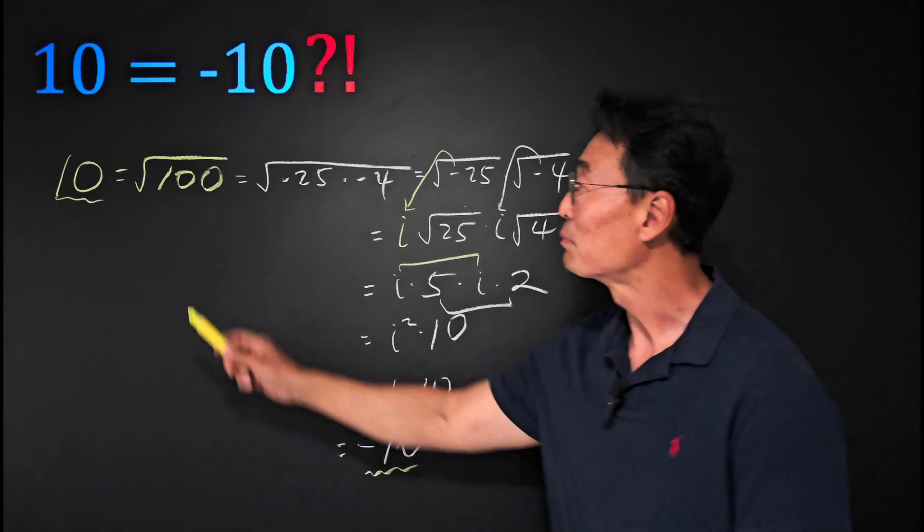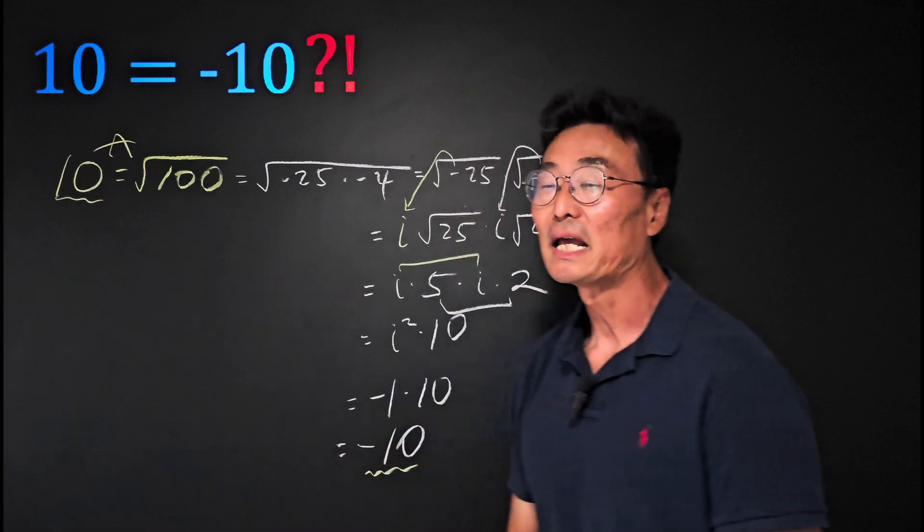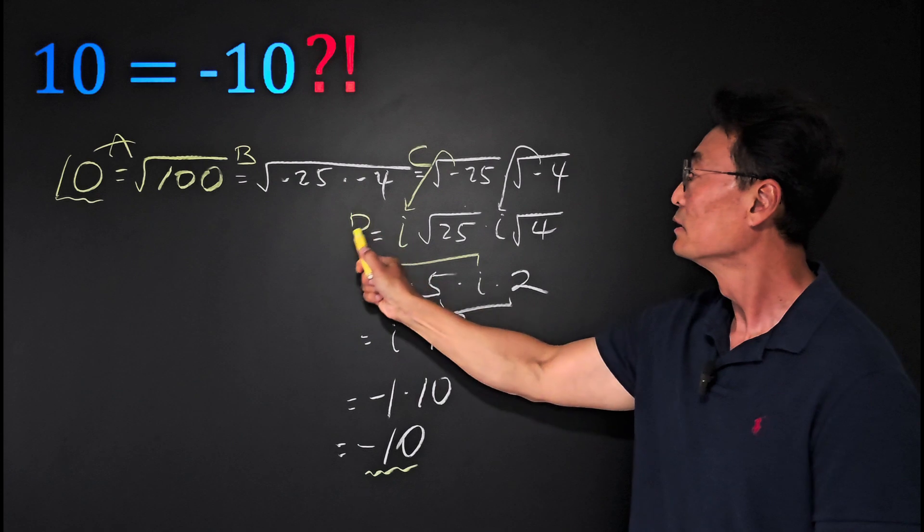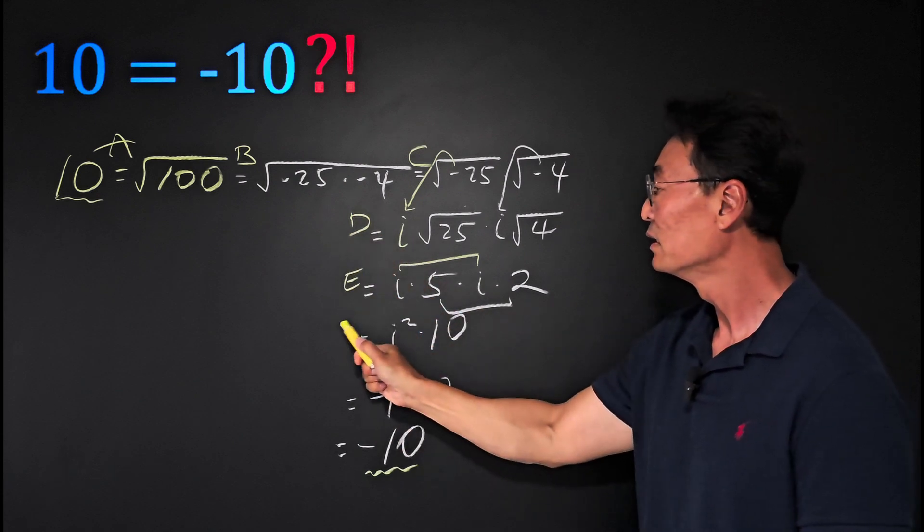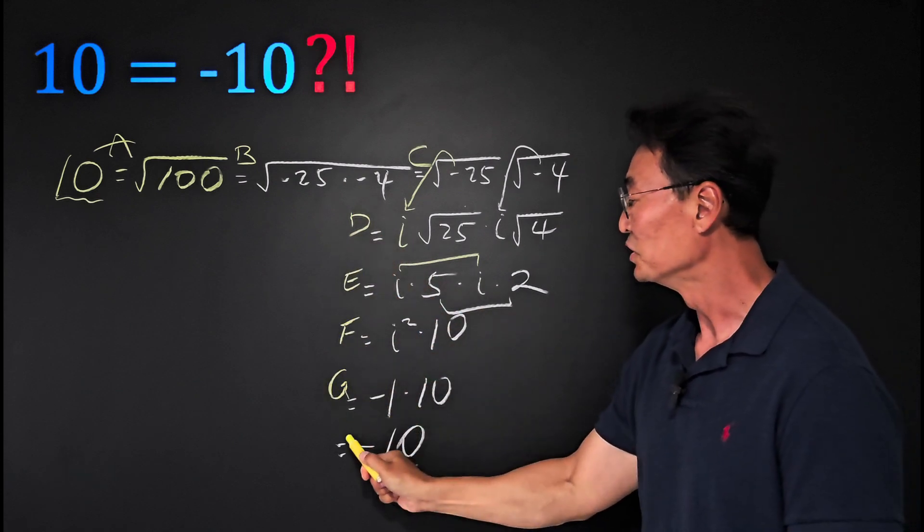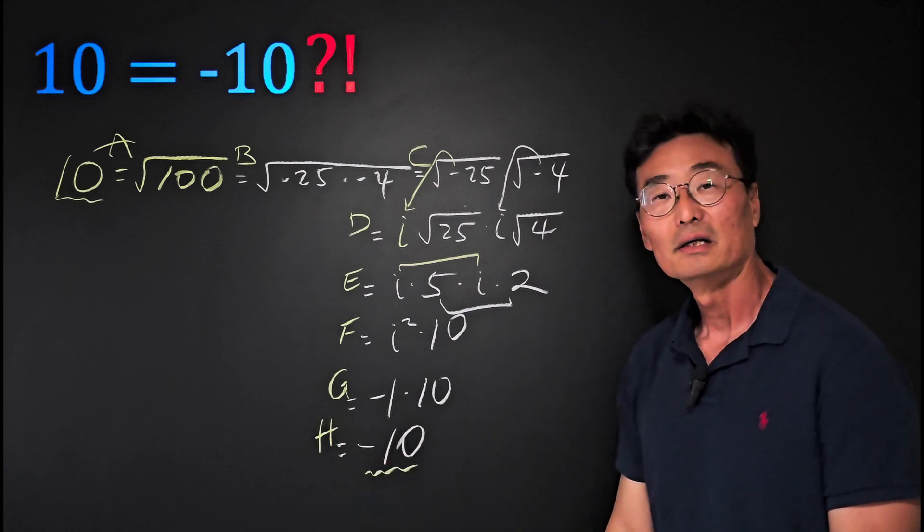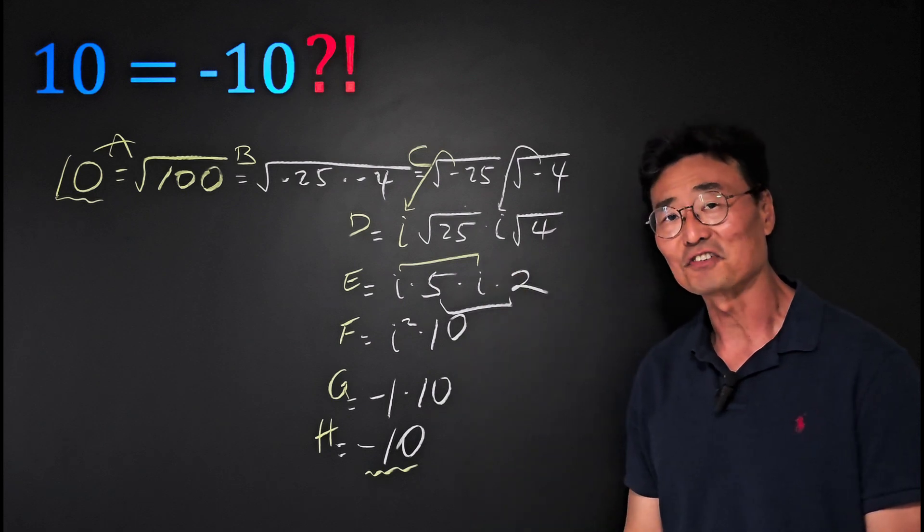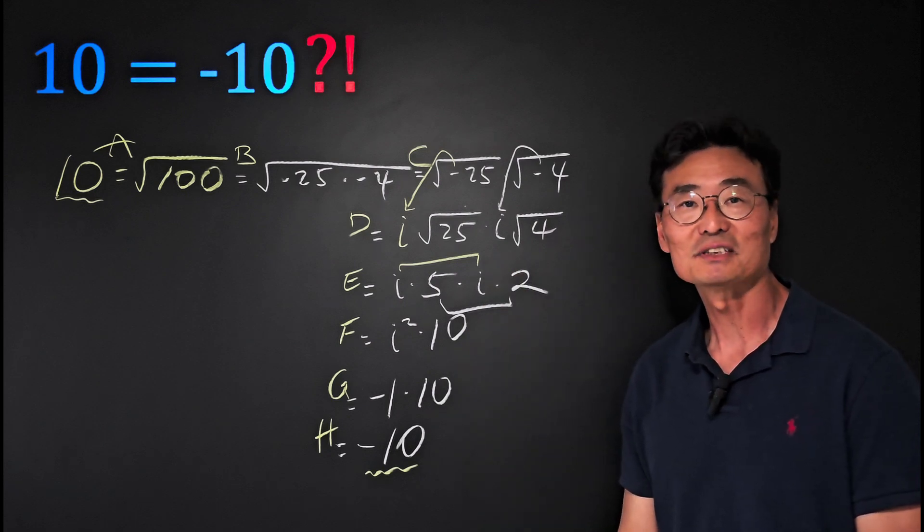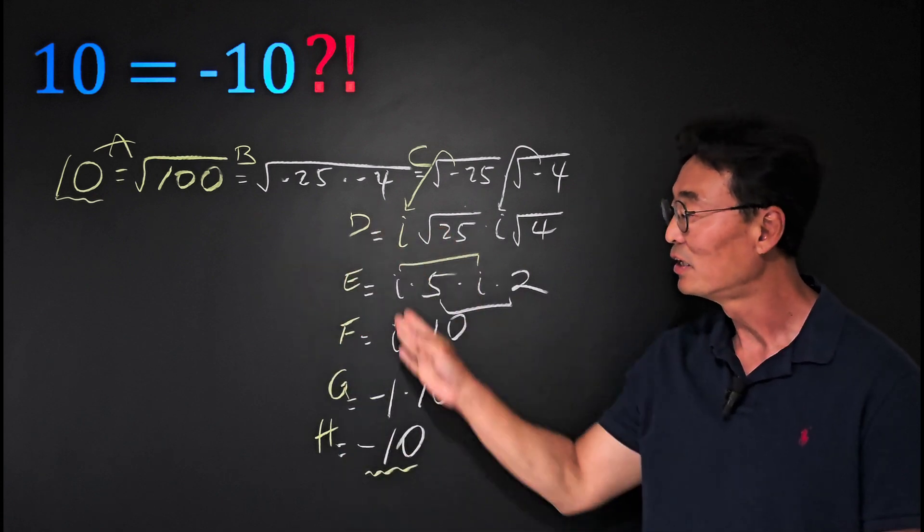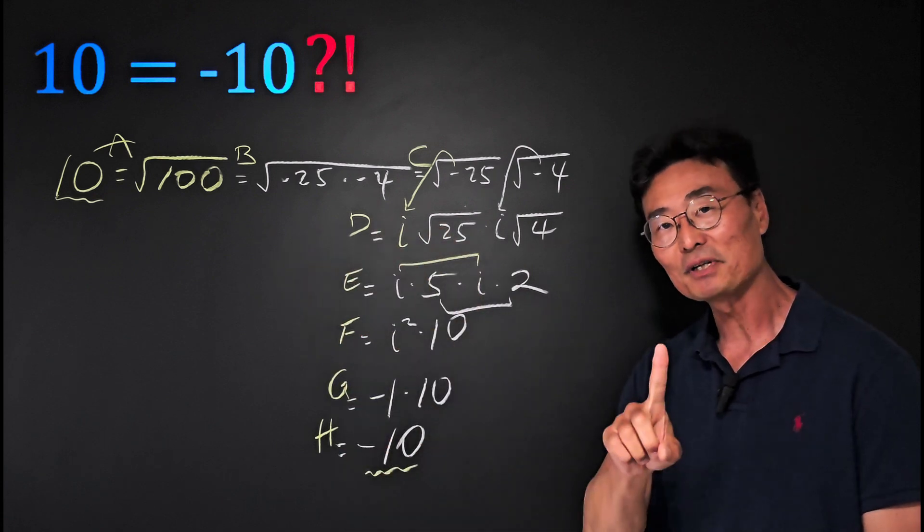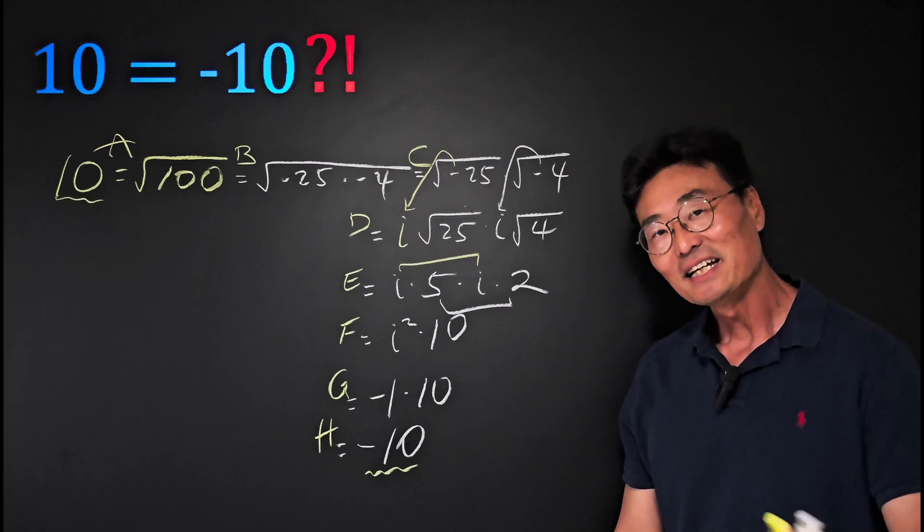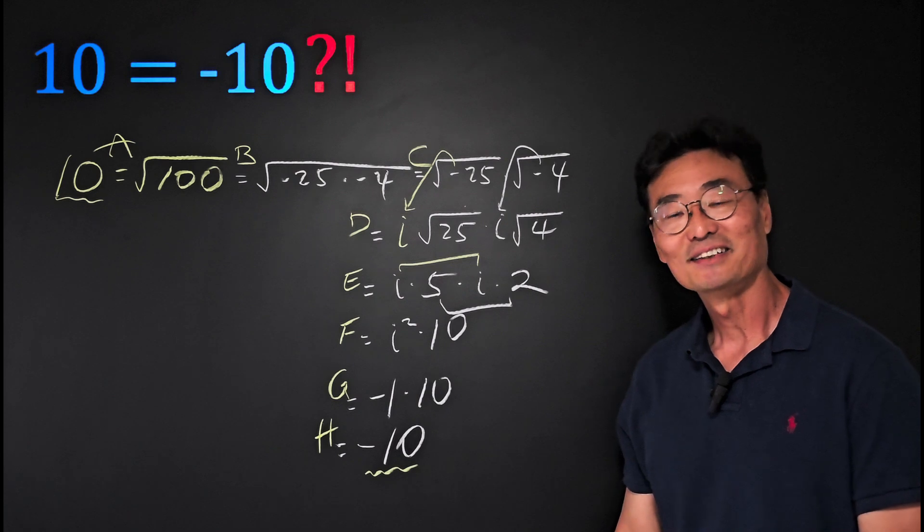Where do you think the mistake happened? Do you think it happened at point A, or B, C, D, E, F, G, or H? Go ahead and hit that pause button. In the comments, type in where you think the mistake happened, then hit play again and watch my answer.